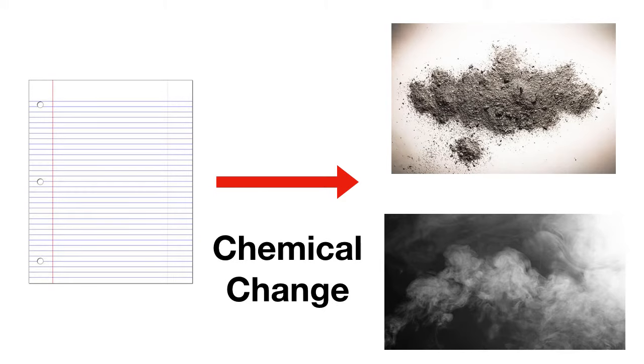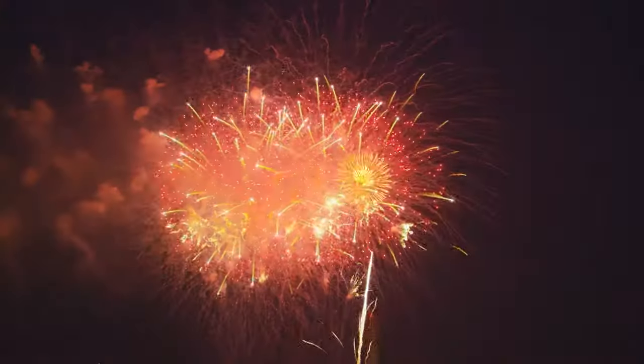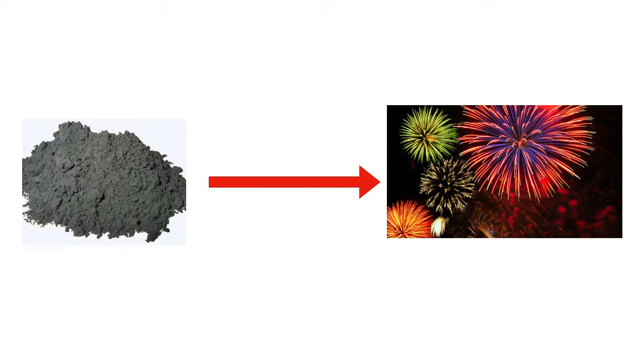Here's another one you've probably seen before. Fireworks are an example of a chemical change. Fireworks are made by taking an explosive powder like this and lighting it on fire. This turns it into the bright gases and explosions you see in the air. And because the powder is turning into these exploding gases, this is an example of a chemical change.